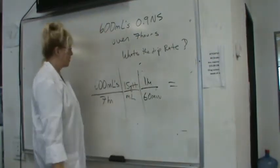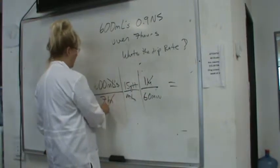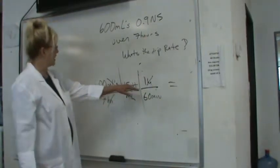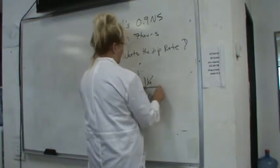Numerators get multiplied. Let's cancel our units. mLs cancel mLs, hours cancel hours. 600 times 15 times 1? 9,000. 9,000 over 420.